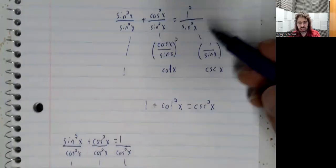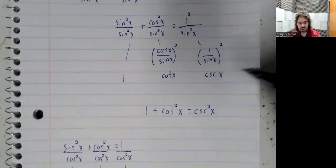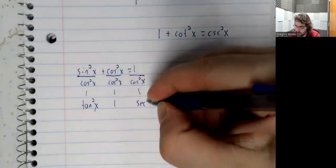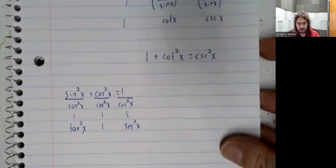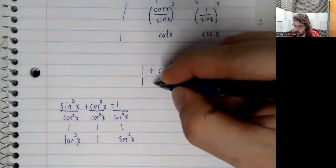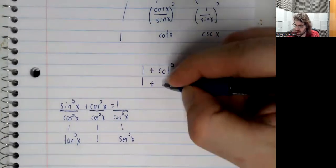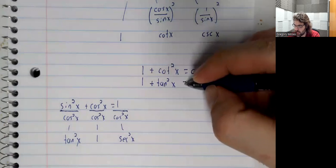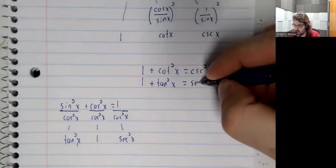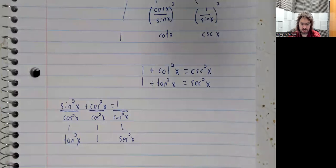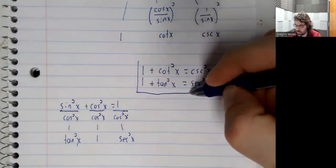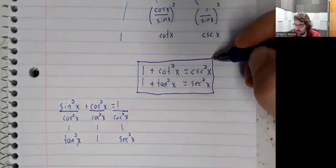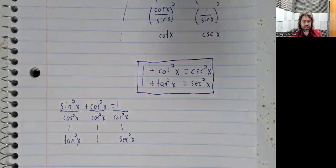And just like this became the cosecant squared, 1 over the cosine squared will become the secant squared. To give us 1 plus the tangent squared of x equals the secant squared of x.